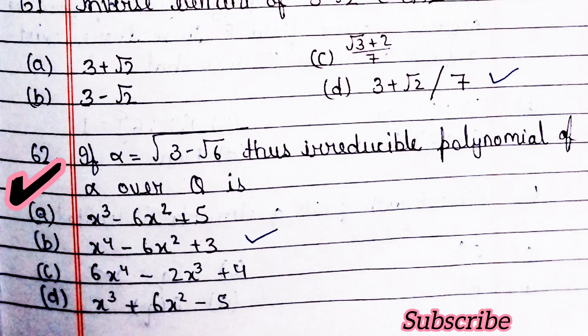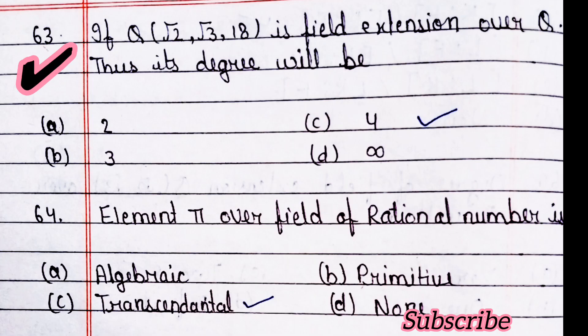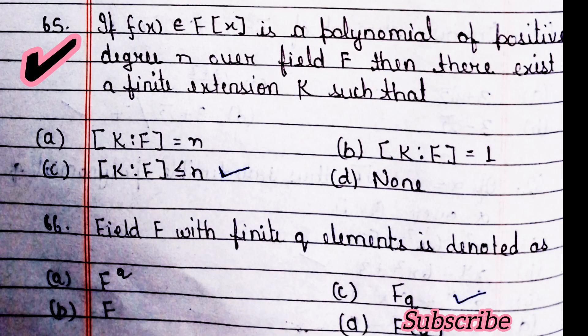Next question: if alpha equals √3 minus √(√6), the irreducible polynomial of alpha over Q is — option B is right. Next question: if Q(√2, √3, 18) is a field extension over Q, its degree will be 4 — option C is right. Next question: element pi over the field of rational numbers is — option C is right.